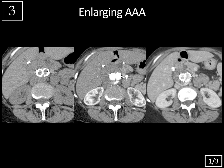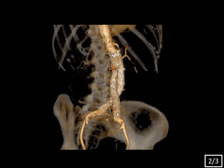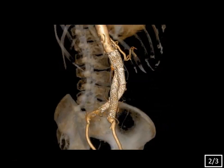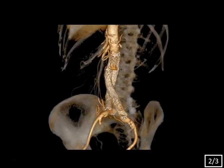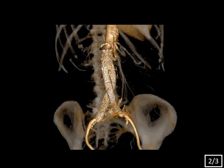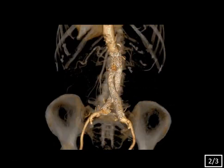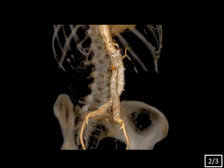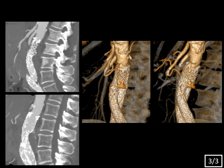Case 3, slide 1 of 3: history of enlarging AAA, multiphase axial CT. Slide 2 of 3: volume rendered reformat of the aorto-iliac junction. Slide 3 of 3: sagittal and volume rendered reformatted images.